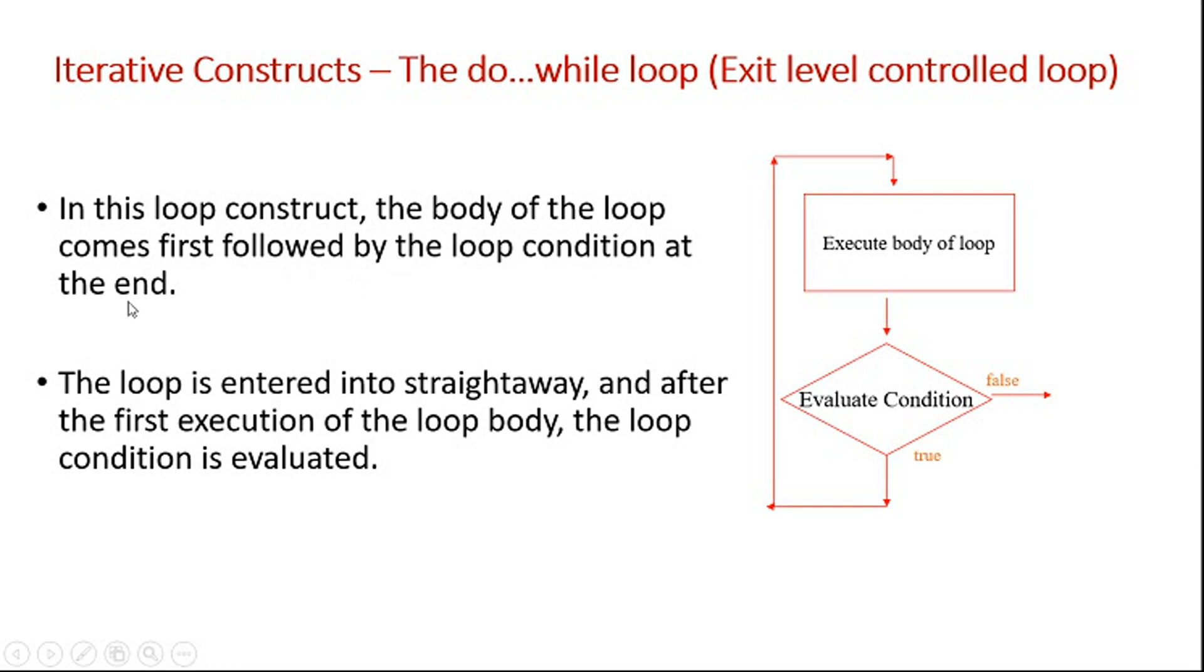Followed by the loop condition at the end. The loop is entered into straightway, and after the first execution of the loop body, the loop condition is evaluated. So if it fails, if the condition fails, then obviously either it will be terminated or given to the other condition. So this is what about the do while. Let's see the syntax.